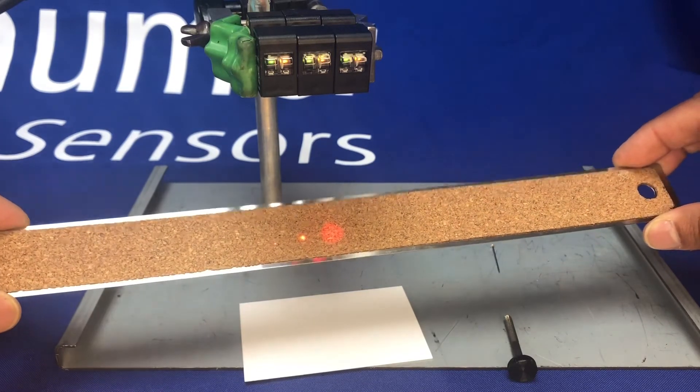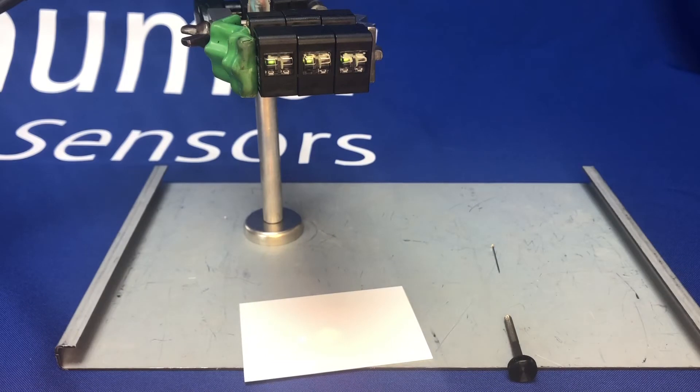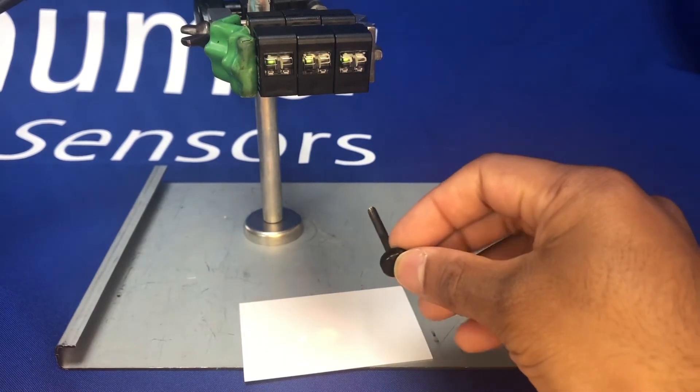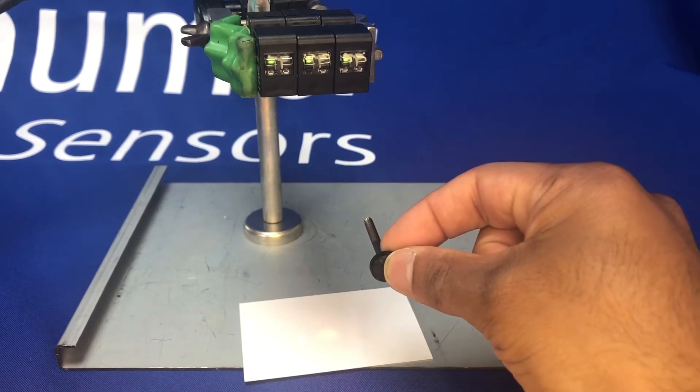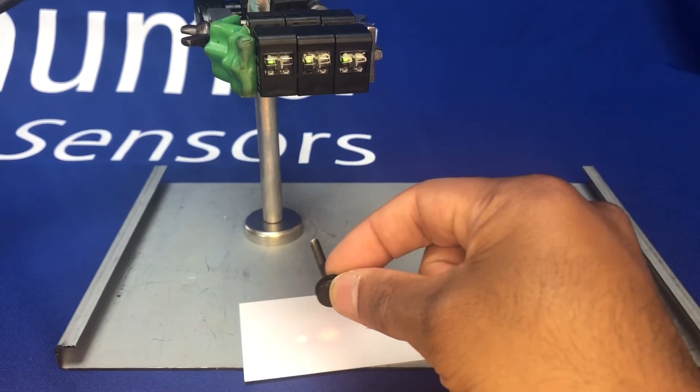If I now introduce something smaller in diameter like this screw head here, or the actual screw body itself, you can see a larger beam spot doesn't quite detect.